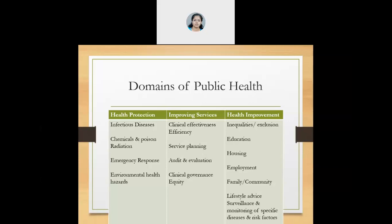Health improvement is another larger domain. How would we address inequalities and aspects of exclusion? How about addressing family and community dynamics? How would we create education and awareness among people? That is why it includes lifestyle advice and surveillance, monitoring of specific diseases, monitoring of risk factors, and having a proper mechanism of communicating the same to multiple stakeholders.